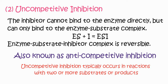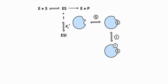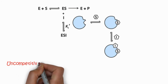In the uncompetitive mechanism, the enzyme reacts with the substrate forming an enzyme-substrate complex, which releases enzyme and product. The inhibitor is attached to the ES complex, forming an enzyme-substrate-inhibitor complex.